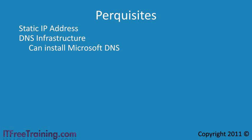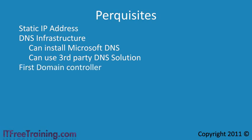I promise that later in the course I will cover DNS in a lot more detail. Active Directory requires DNS infrastructure but it does not have to be Microsoft's. If you have an existing DNS infrastructure such as Unix-based DNS, you can use that as well. The next prerequisite is that you need to ensure that you are a member of the local administrators group.